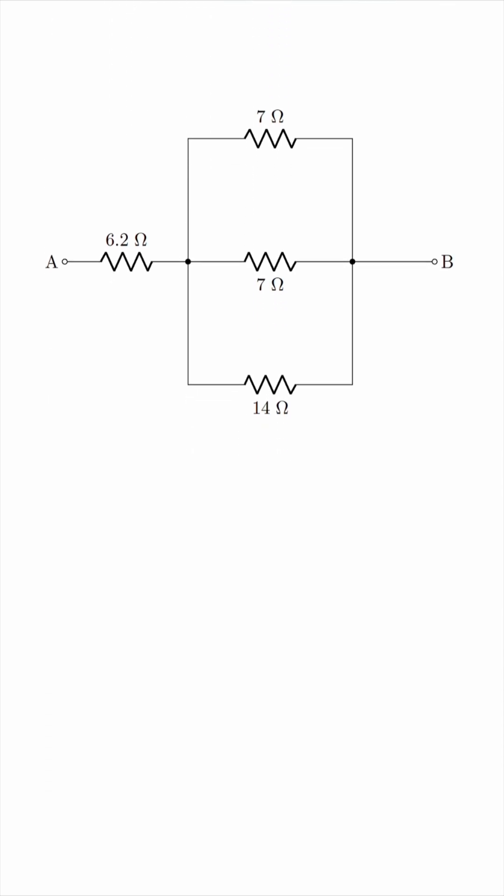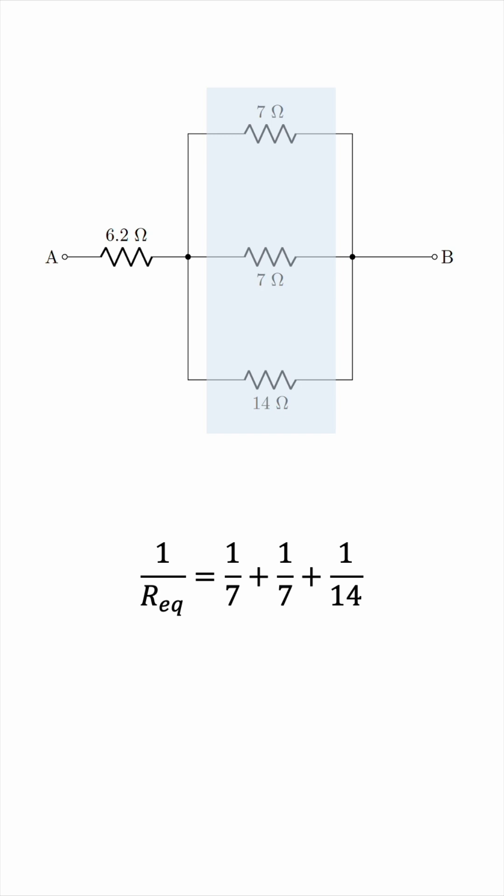And now notice that we have three resistors in parallel because they share the same two nodes. So we can combine them as 1 over 7 plus 1 over 7 plus 1 over 14. So adding their reciprocals, we get 5 over 14. This will be the reciprocal of their equivalent resistance, so we'll invert the equation, and that'll give us 14 over 5, which is 2.8 ohms. So we can replace these three parallel resistors with a single resistor of resistance 2.8 ohms.